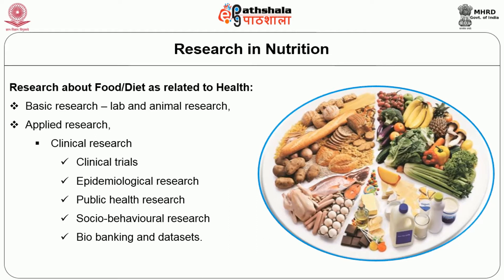Basic research can be laboratory animal studies or in vitro studies in the lab, for which you have guidelines for animal experimentation. But as far as applied research on human beings is concerned — which is the clinical research — although the basic principles from the earlier lecture have to be followed, when it comes to the specific type of study you are doing, there are certain minor modifications, variations, and concerns which one has to address. So what is the kind of studies you may do as a student in food and nutrition?